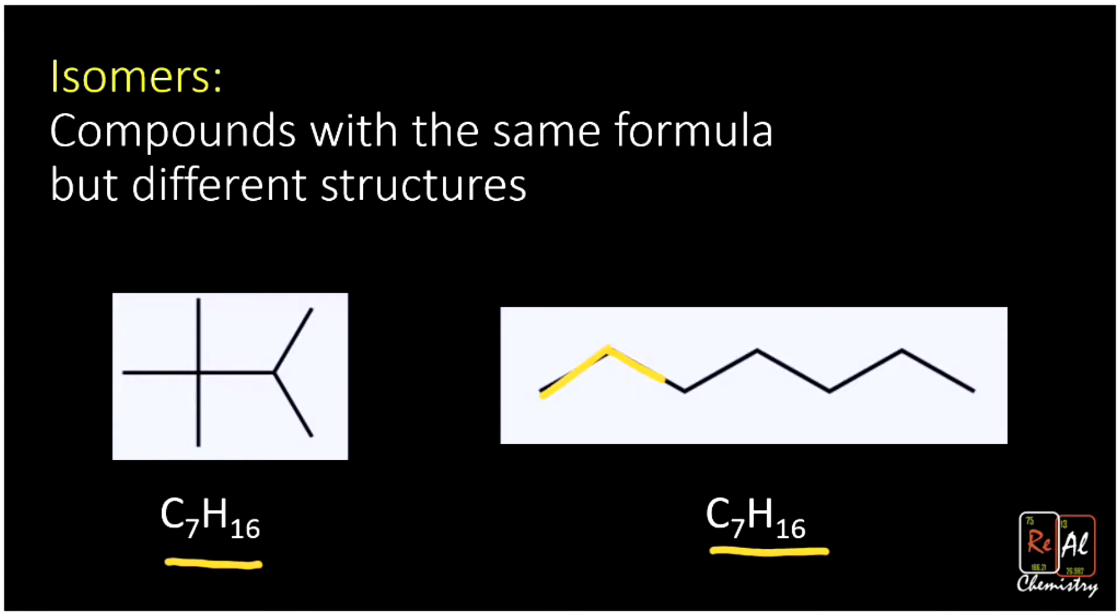But on the left, we have regular old heptane in one linear structure. And on the right, we have this crazy branch structure. So different molecules, same formula. That makes them an isomer. So whenever they have different structures, but they have the same molecular formula, we have an isomer.